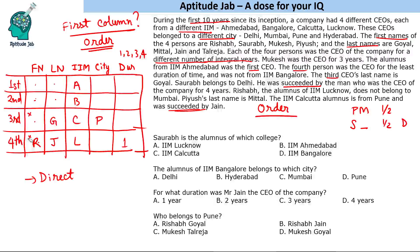Mukesh is the third CEO. Mukesh was CEO for three years. Rishabh does not belong to Mumbai, and Saurabh belongs to Delhi. So the person from Mumbai must be Piyush Mittal — he is from Mumbai.